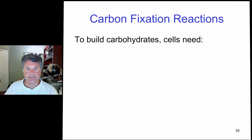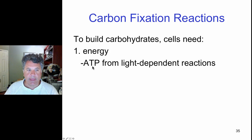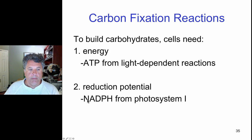Alright, now we've covered the light-dependent reactions of photosynthesis. Let's move on to the Calvin cycle, or the light-independent reactions. These are the carbon fixation reactions. And we know that to build carbohydrate, cells need energy, of course. And we derive that energy from ATP, that is produced by the light-dependent reactions and mechanisms we've already talked about. And we need reduction potential provided by reduced NADP, or NADPH.